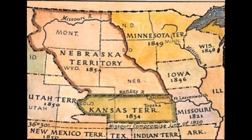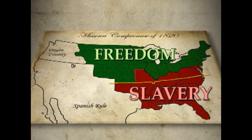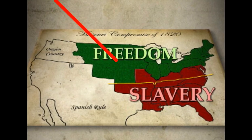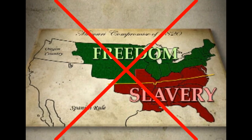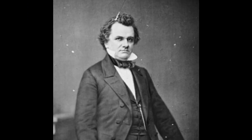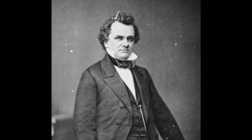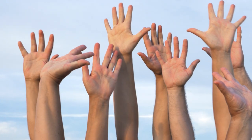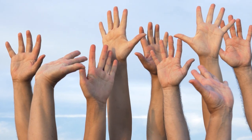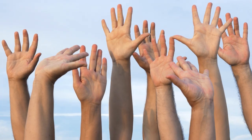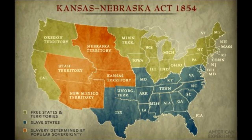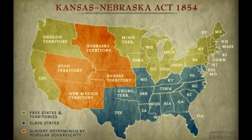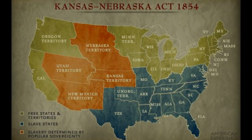This meant that both territories were supposed to be free territories due to their location north of the 36°30' Line. To avoid angering Southerners, Douglas proposed abolishing the Missouri Compromise and allowing popular sovereignty in Kansas and Nebraska, which meant the people would vote on slavery themselves. After intense scrutiny and division in Congress, the Kansas-Nebraska Act became law in 1854.